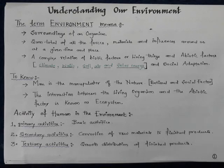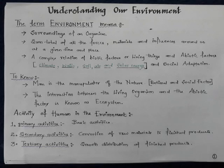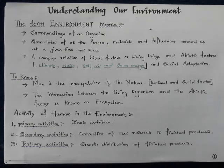The very primary activity of man is agriculture, where man is involved in growing crops. For cultivation or growing of crops, soil is a very important factor. Soil not only helps in growing crops but also helps in growing those plants and trees which make up the natural vegetation and the green belt on the earth.